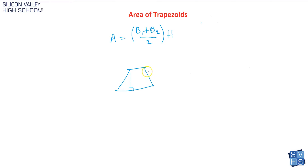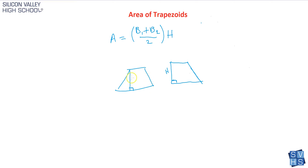So this would not be a height, and this would not be a height either. There are cases where a trapezoid could look like this, where one of the non-parallel sides is perpendicular to the bases — that would be the height. But if a side is diagonal, that is not the height. Once you know which measurement is the height, it's pretty easy to just plug in the values.